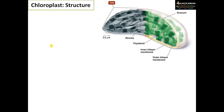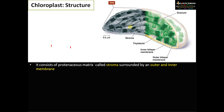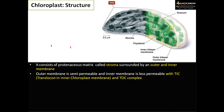Moving into the structure of chloroplast: it consists of a proteinaceous fluid-filled matrix called the stroma. It is a double membrane bound organelle with an outer membrane and an inner membrane. The outer membrane is semi-permeable — permeable to small ions but not to large proteins. Both membranes have translocon complexes or channels for transporting proteins or larger molecules. It is called the TIC complex in the inner chloroplast membrane and the TOC complex in the outer chloroplast membrane.